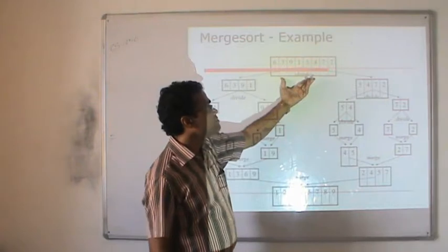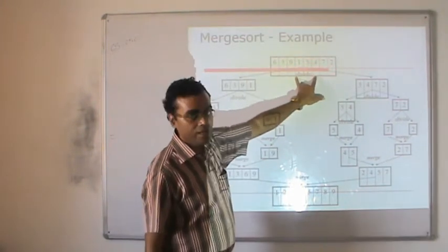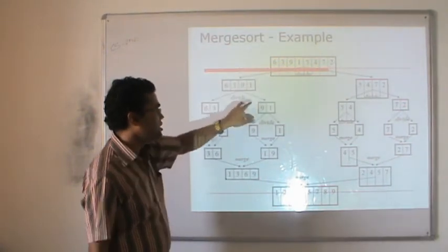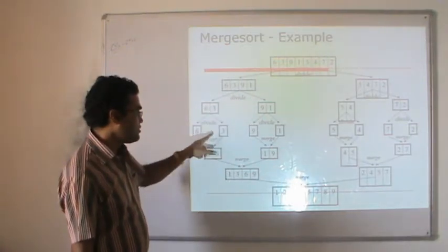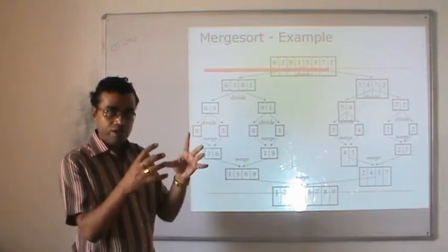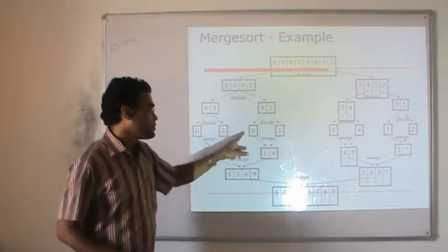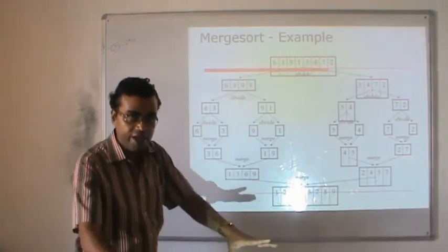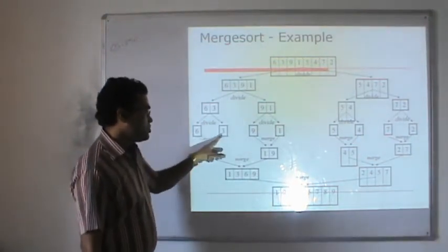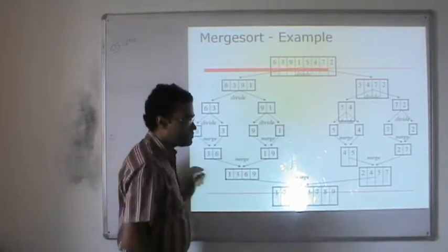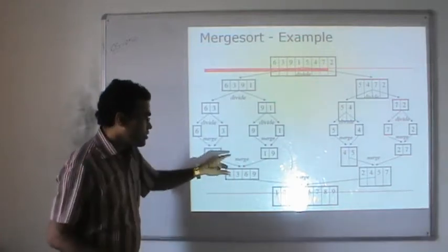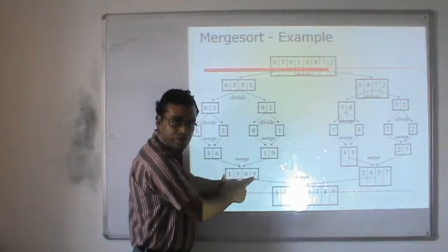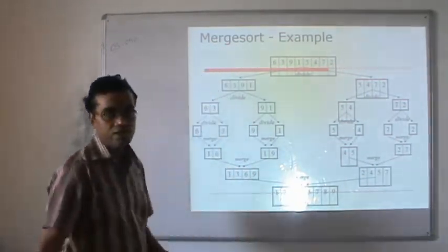Example with eight elements: divide into four and four — [6,3,9,1] and [5,4,7,2]. Divide further into [6,3], [9,1], [5,4], [7,2], then into single elements. Merge pairs in sorted order: [3,6], [1,9], [4,5], [2,7]. Merge pairs again: [1,3,6,9] and [2,4,5,7]. Finally merge these two sorted halves to get the complete sorted data. Another example with six elements follows the same divide-then-merge approach.